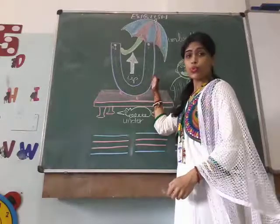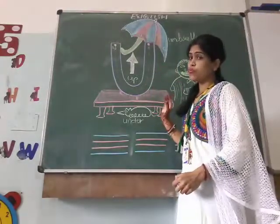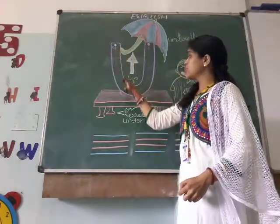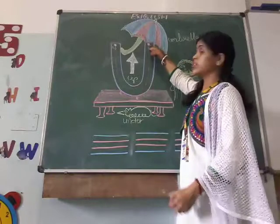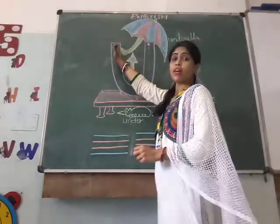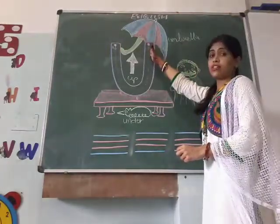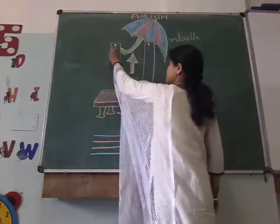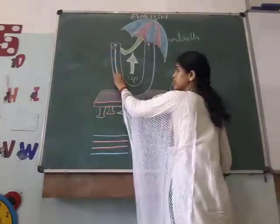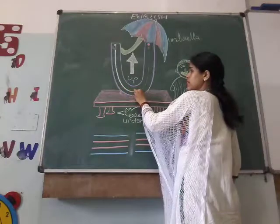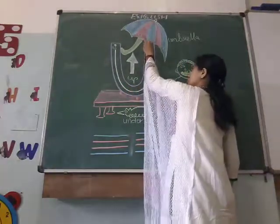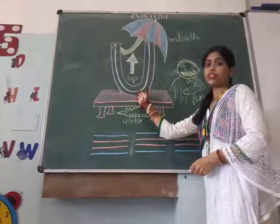This is U. Now, how to write U? We will start from this green dot and we will take it to the pink dot. We will start from here and leave it here till this pink dot. We will press according to this dot. This is the way to write U, and then we will take it from here. This is U — it's a perfect U.